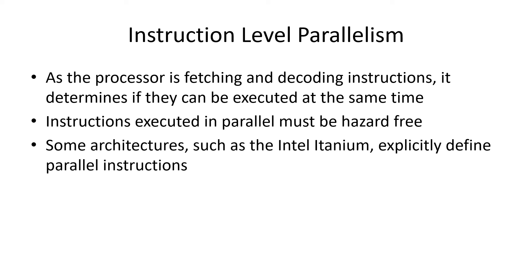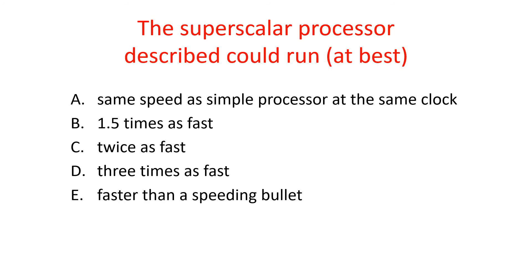On the other hand, if there's a hazard, it will execute them sequentially. There are some architectures, such as the Intel Itanium, that explicitly define parallel instructions. The Itanium instructions come in bundles of three instructions that are all guaranteed to be hazard-free. The answer is C — twice as fast — because the computer can pick up two instructions and execute them in parallel.